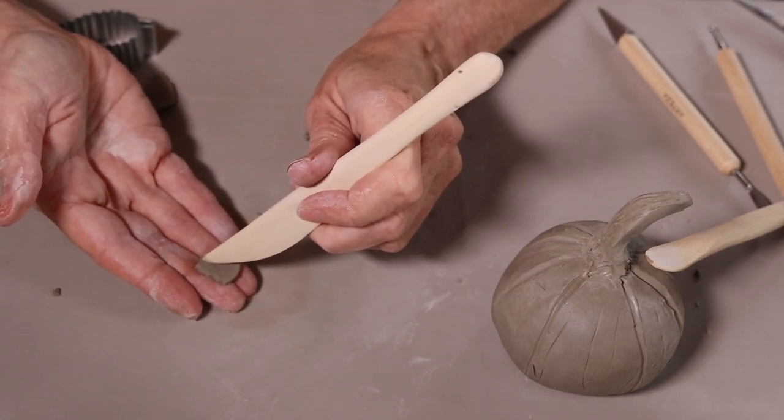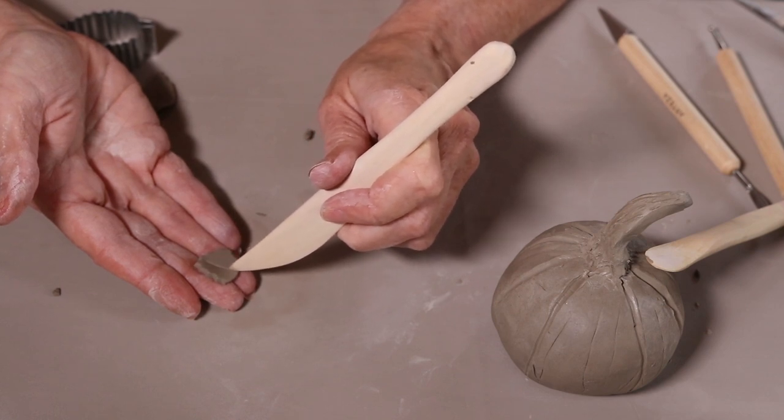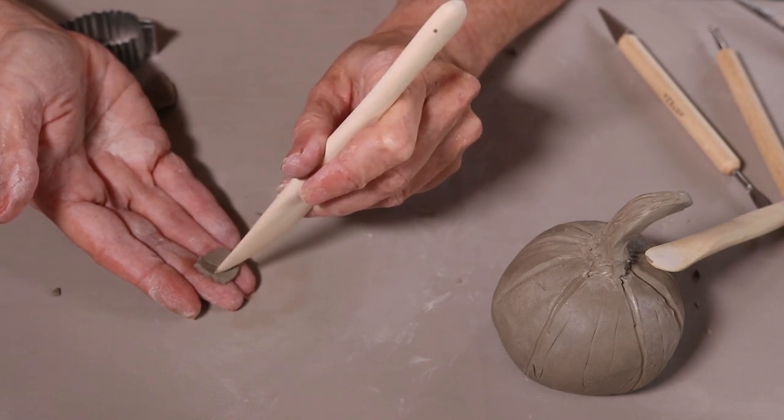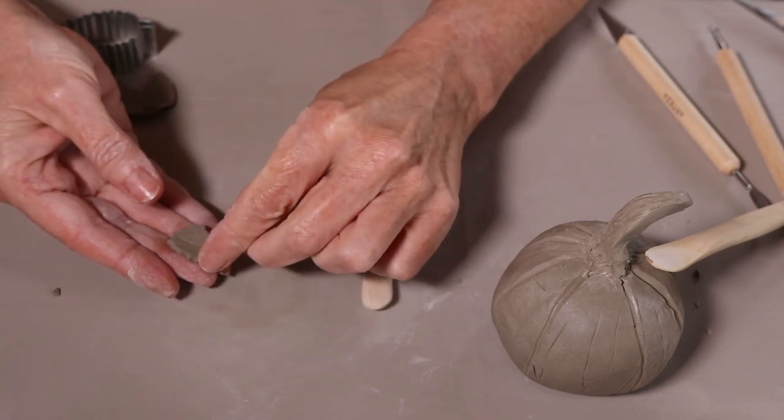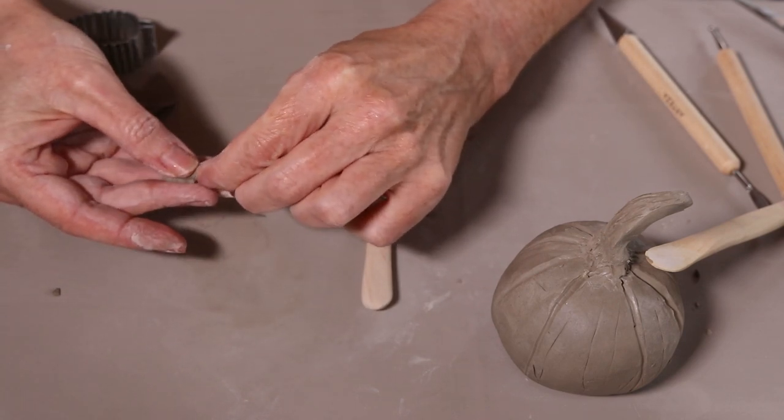And all you need to do is you could use the wooden tool for this, use a wooden tool put the line down the middle a few lines here so make it leaf like and then just pinch pinch pinch.